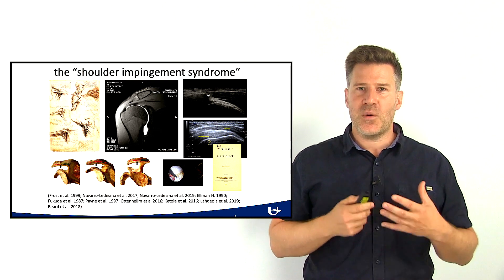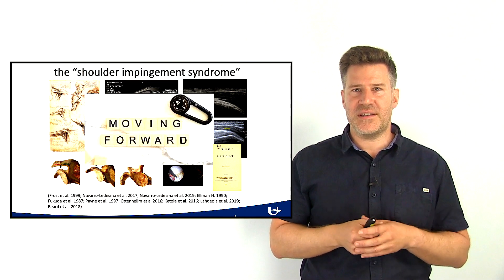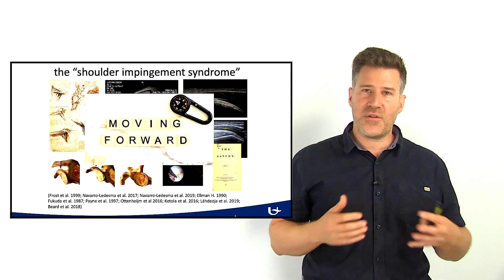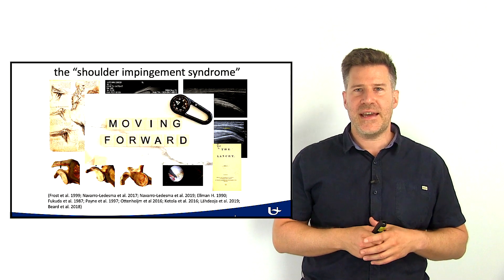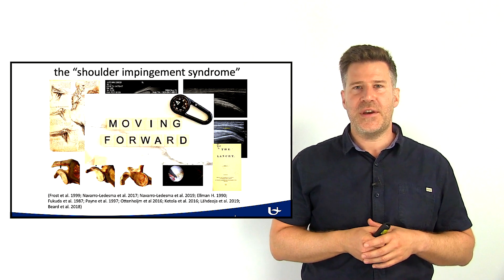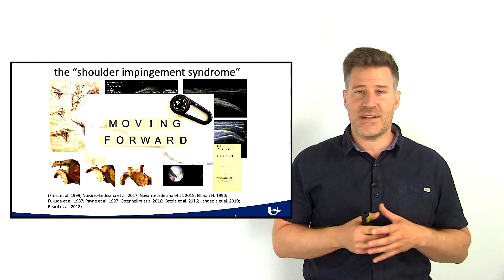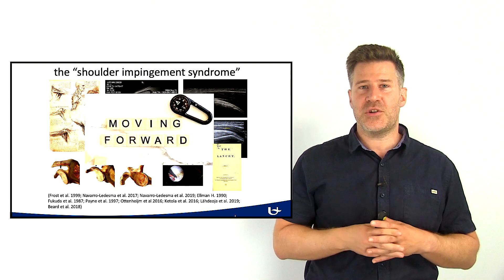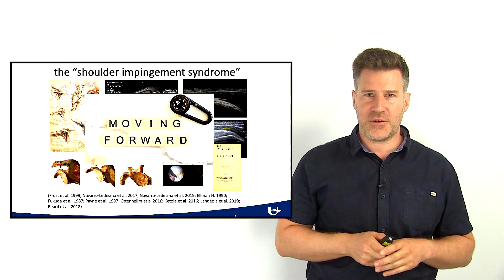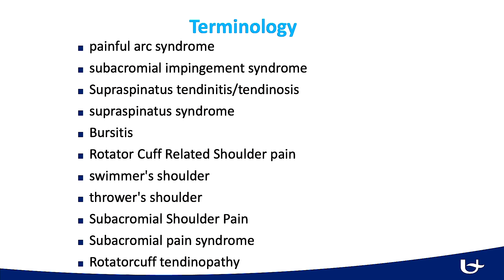Several researchers have explored the literature and searched for evidence that the subacromial space is to blame, but they were all disappointed. There is no evidence that the subacromial space is to blame, and consequently, there is no evidence that we should keep on using the term impingement syndrome. On the contrary, there is growing evidence to avoid this term, as patients will avoid moving their arm if they believe that some impingement is going on in their shoulders.